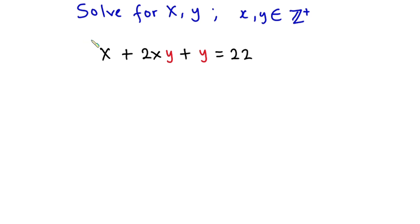Hello everyone. In this video we have this interesting problem: x + 2xy + y = 22, and we have to find the values of x and y where x and y are positive integers. Before we begin, pause the video and try first. If you are new here, consider subscribing and don't forget to like this video. Now let's get started.